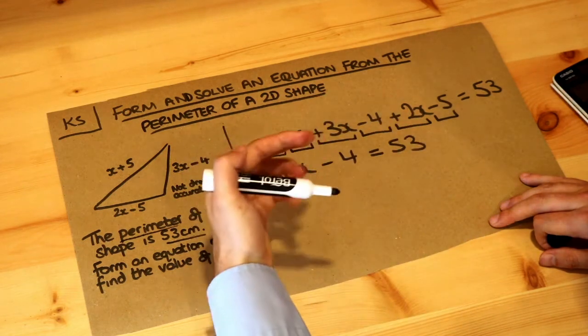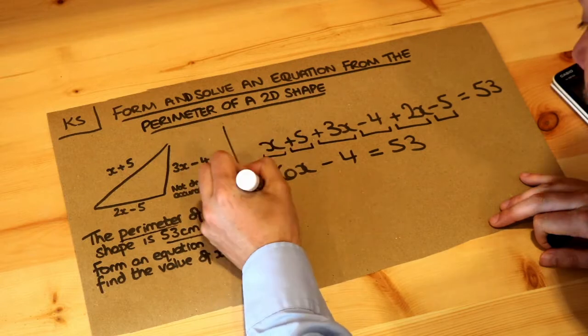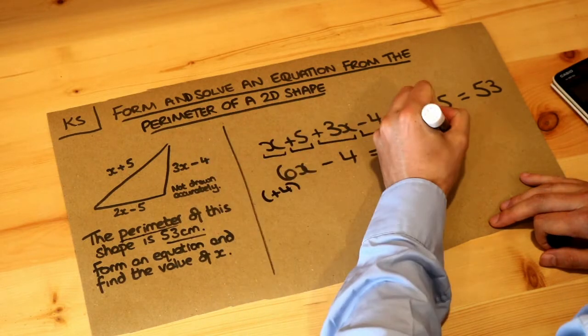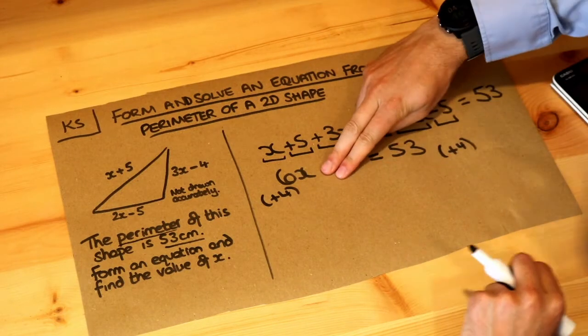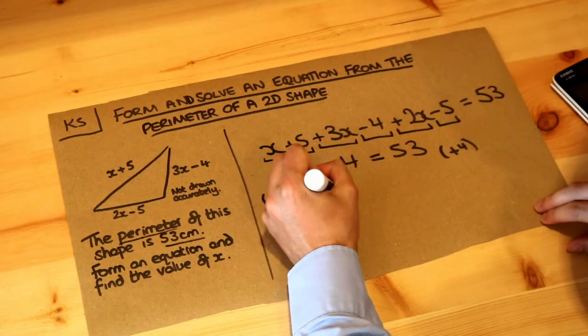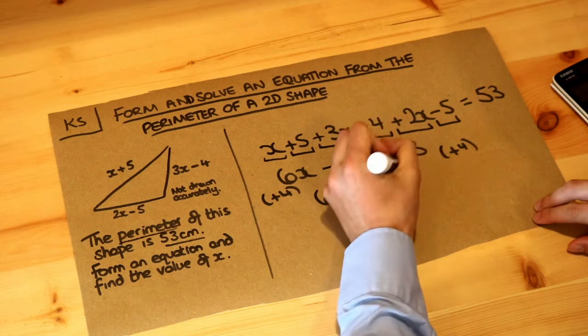So we undo the last thing, we undo the minus 4, which is adding 4. So we do that to both sides. So we add 4 to the left-hand side, that gets rid of the minus 4, leaving 6x. Add 4 to this, we get 57.